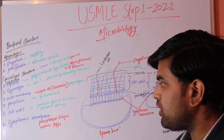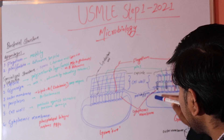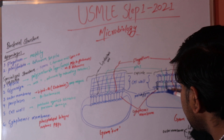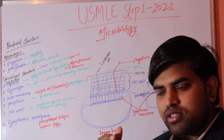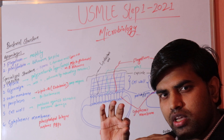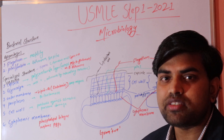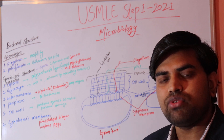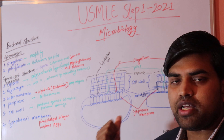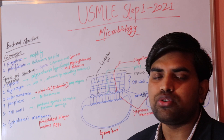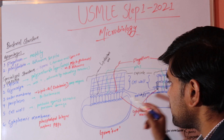The periplasmic space is the space between the cell wall and the cell membrane. Bacteria store drug-resistant enzymes in this periplasmic space. For example, if gram negative bacteria already have beta-lactamase enzyme in the periplasmic space, it will destroy incoming penicillin or any beta-lactam antibiotic, rendering the drug useless and making the bacteria resistant.